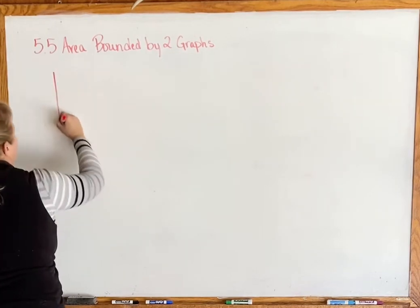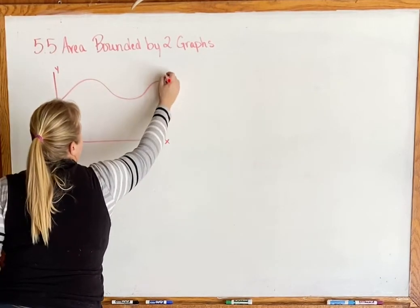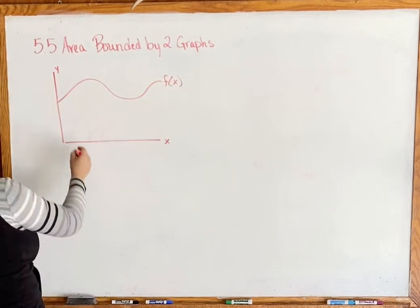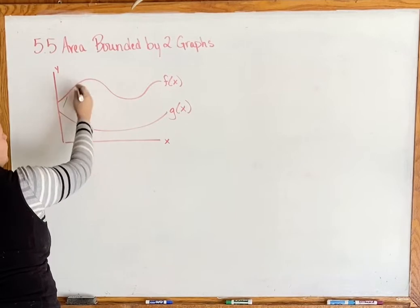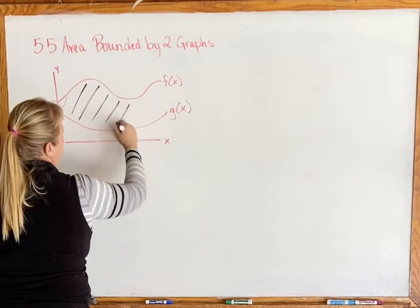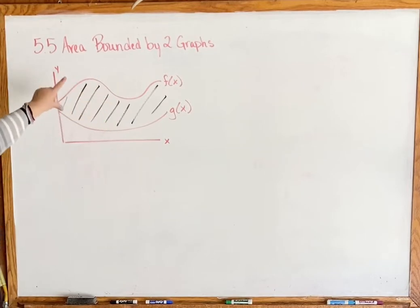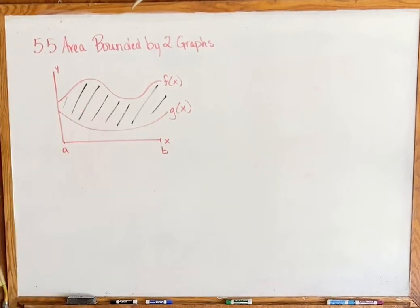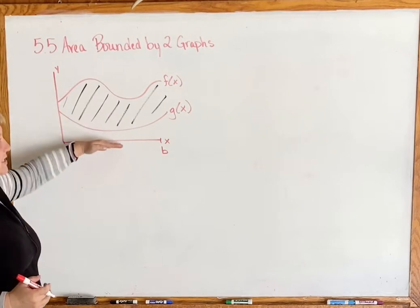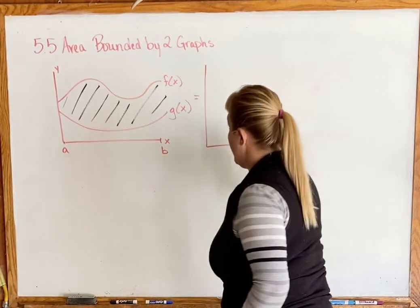I'm going to draw a picture first. Let's say I gave you a graph with two functions on it — we've got f(x) and g(x). This time I'm not interested in the entire area all the way to the x-axis; what I'm interested in is the area between the two functions, from point a out to point b. The question is how are we going to do this if a regular integral goes down to the x-axis.